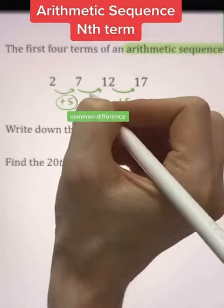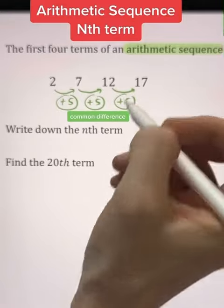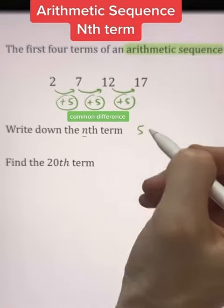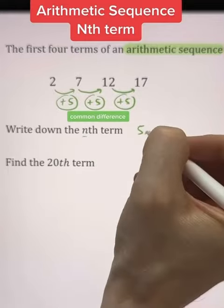We know it is a common difference. In this case, our common difference is positive 5. As we want to work out the nth term, it's always our common difference, in this case positive 5, in front of the letter n.